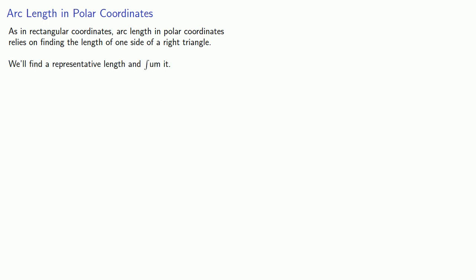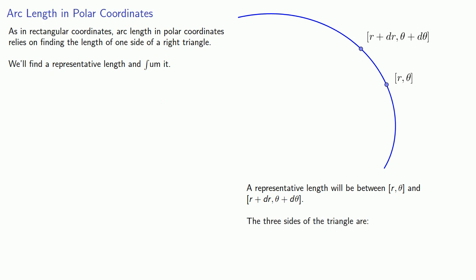And so we'll find a representative length and sum it. So we might find our representative length between a point [r, θ] and a nearby point [r + dr, θ + dθ]. And so we'll have three sides of the right triangle. The hypotenuse, which will run from [r, θ] to [r + dr, θ + dθ].